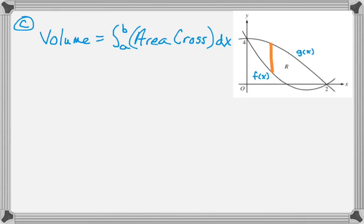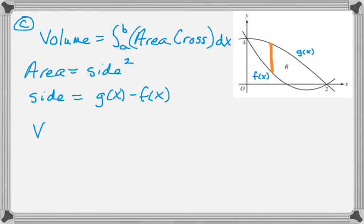The volume with known cross sections is the integral from a to b of the area of a cross section, dx. The area is side squared because it's a square, and the side of the square is g(x) - f(x).